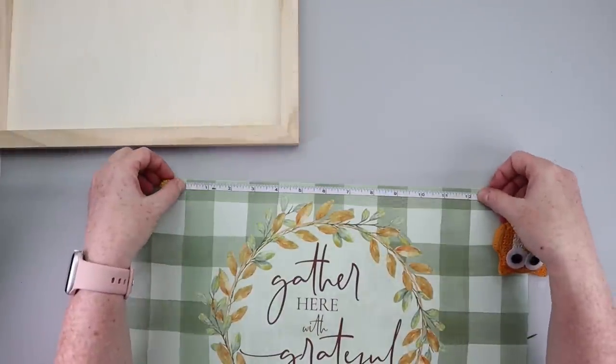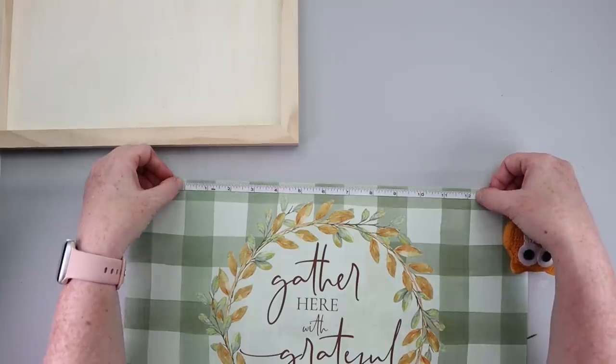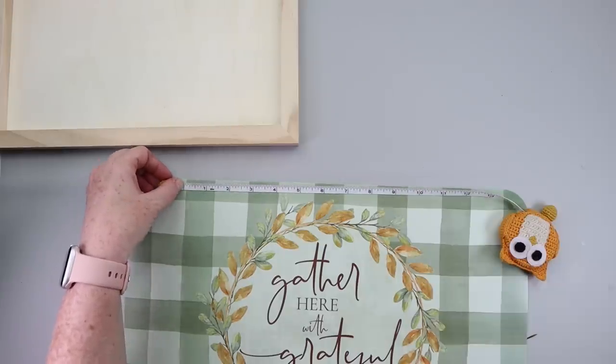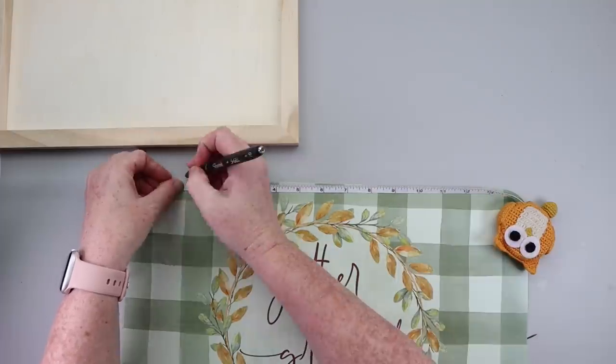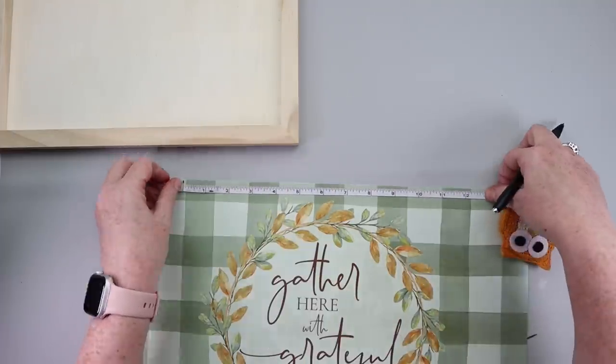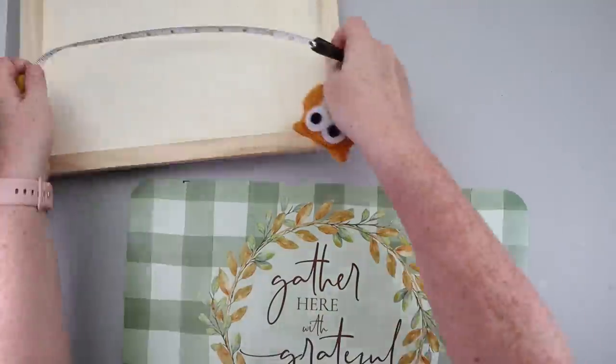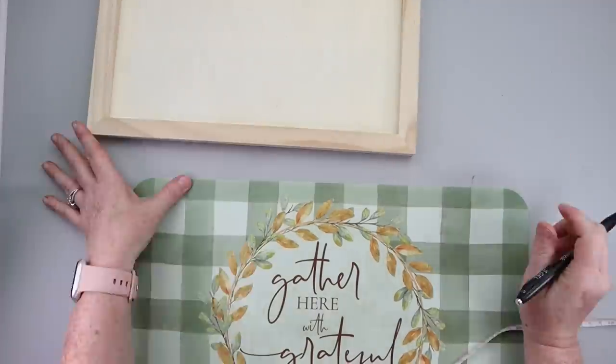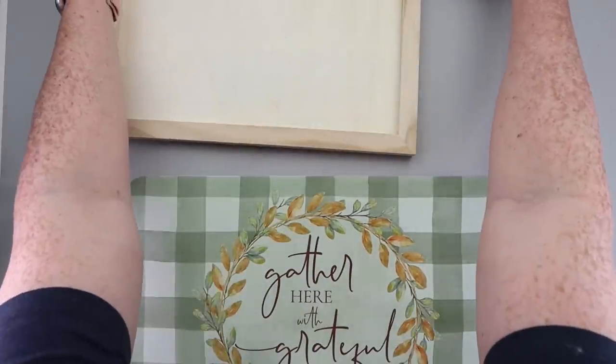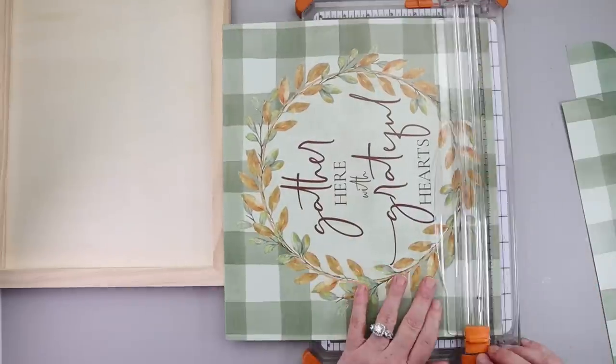You also need a Dollar Tree placemat. So this is where you're going to be able to make this charger multi-seasonal. You could leave it plain but by taking the placemats you trim them down so it was like 12 and a half by 9 and a quarter for the inside of this wooden charger and so I just used my Fiskars paper cutter.